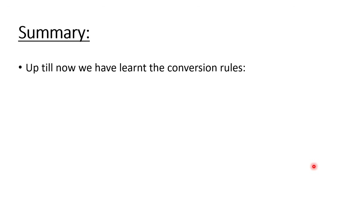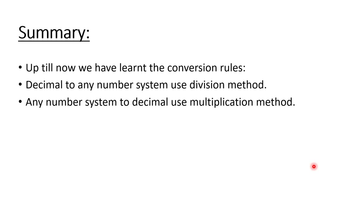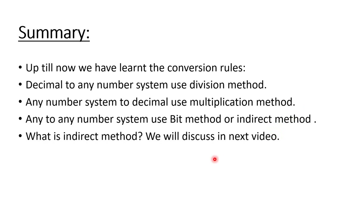Here is the summary of the lecture. To convert a decimal number to any number system, use the division method. To convert any number system to decimal, use the multiplication method. To convert any number system to any other number system, use the bit method or the indirect method. We will discuss the indirect method in the next video.